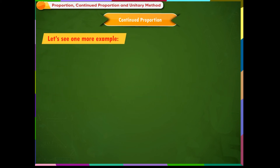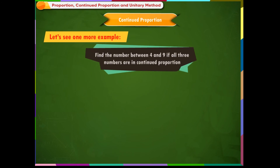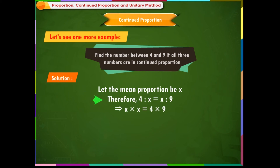Continued proportion is also called mean proportion. Example 1: Find the number between 4 and 9 if all three numbers are in continued proportion. Solution: Let the mean proportion be x. Therefore 4:x = x:9, which gives x × x = 4 × 9, so x² = 36.